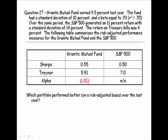Let's summarize. We had the same information and solved for Sharpe, Treynor, and Jensen's Alpha. Which portfolio actually performed better on a risk-adjusted basis? If we go by the Sharpe measure, the Granite Mutual Fund outperformed the S&P. According to the Treynor ratio, however, the Granite Mutual Fund underperformed the S&P. Alpha also indicated that Granite Mutual Fund underperformed the S&P.